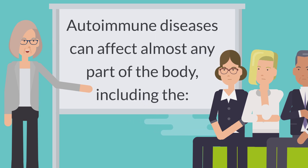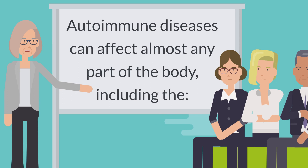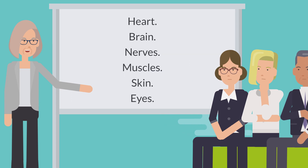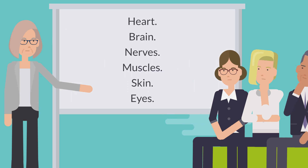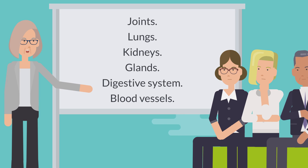Autoimmune diseases can affect almost any part of the body, including the heart, brain, nerves, muscle, skin, eyes, joints, lungs, kidneys, glands, digestive system, and blood vessels.